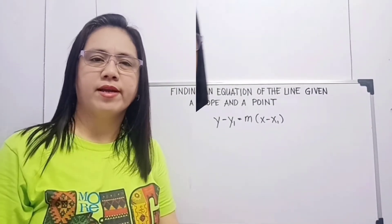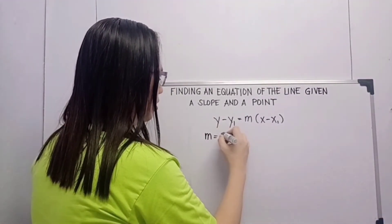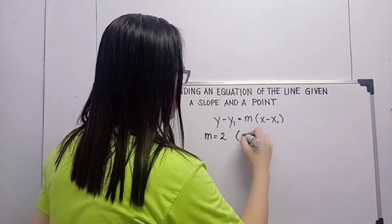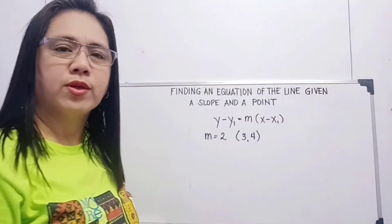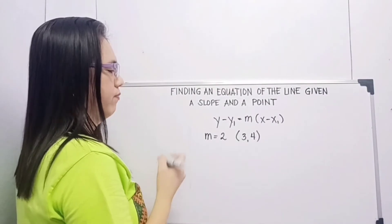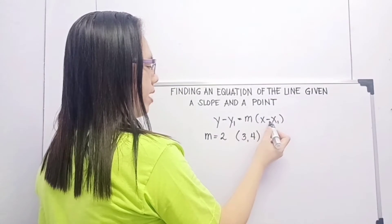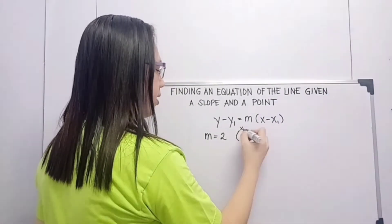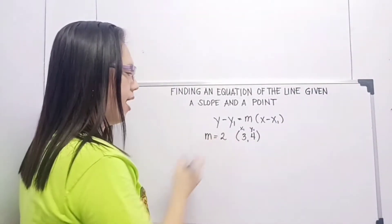Let's have our example number 1. Our m is equal to 2 and our point is (3, 4). So what we are going to do is substitute the values. So y minus y sub 1 is equal to m times x minus x sub 1. Our x sub 1 here is 3, this is our y sub 1 which is 4, and this is our m which is 2.